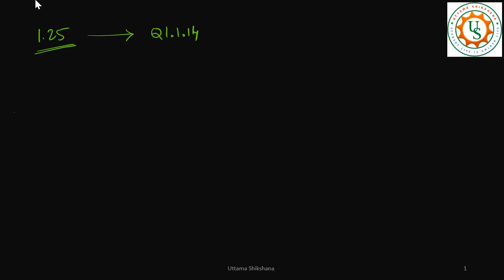Hey guys, welcome back. In this video I will talk about understanding different Q formats, how to convert from one Q format to another, and also how to represent negative numbers in a Q format. In the previous video I was mainly talking about 1.25 and representing it in a Q format. I basically took Q1.1.14 because this number can be represented with one sign bit, and out of 16-bit DSP registers, the remaining 14 bits are allocated for the fractional part.